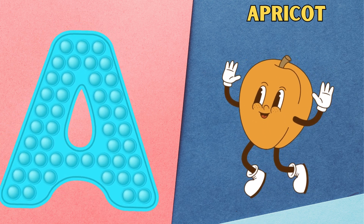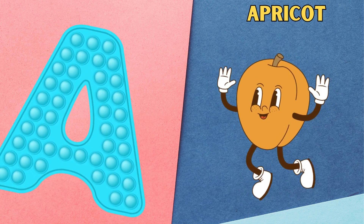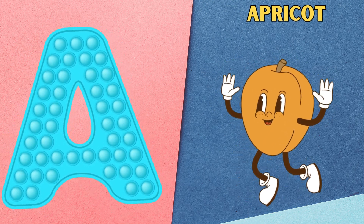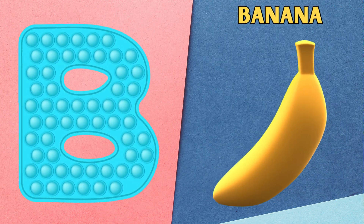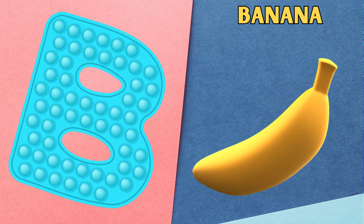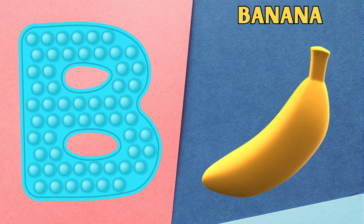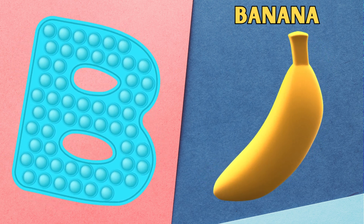A is for apricot, apricot. B is for banana, banana.